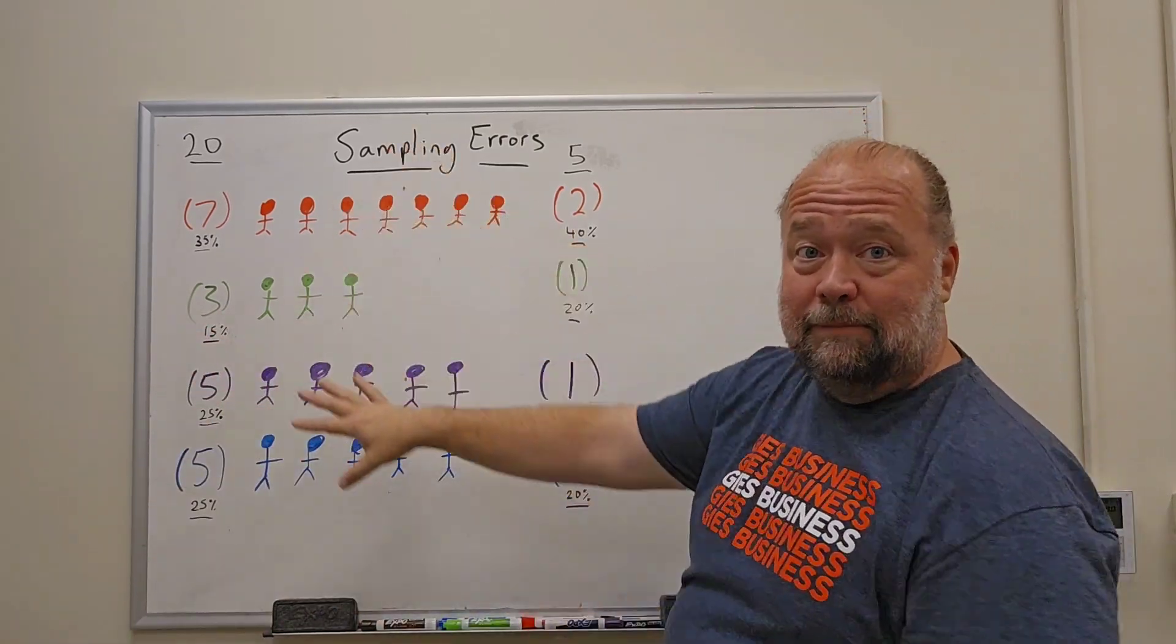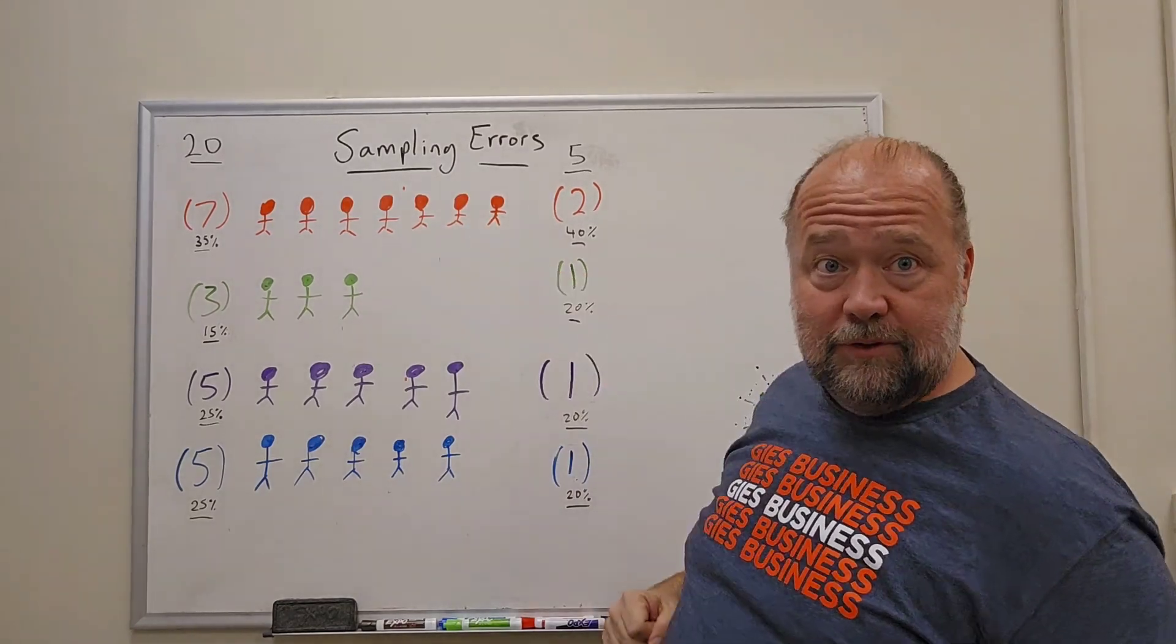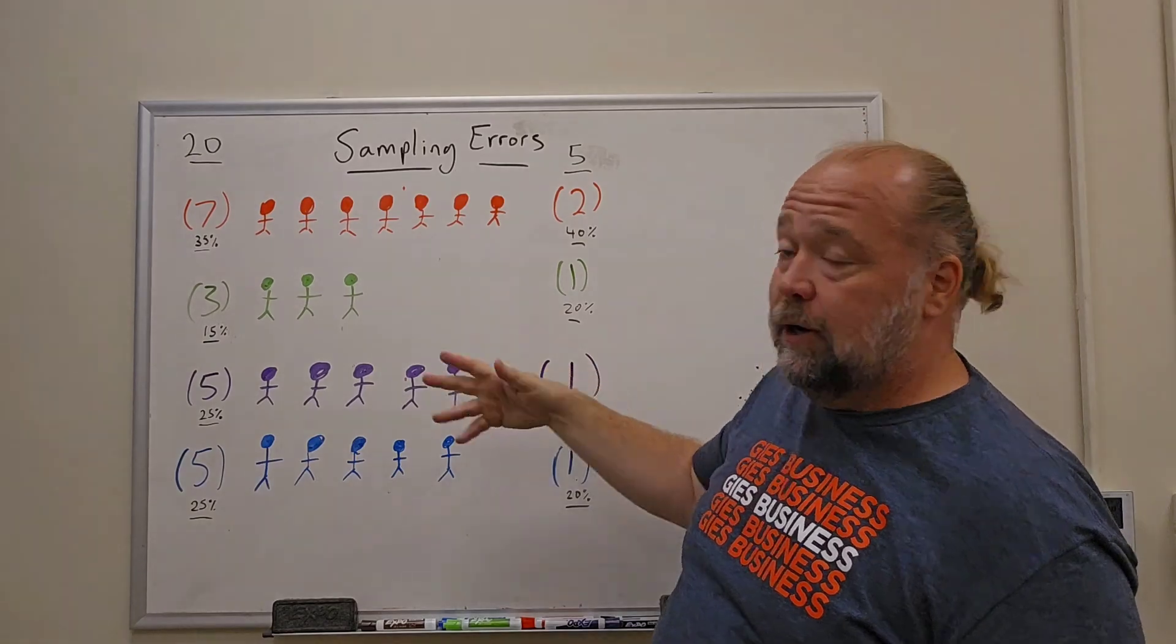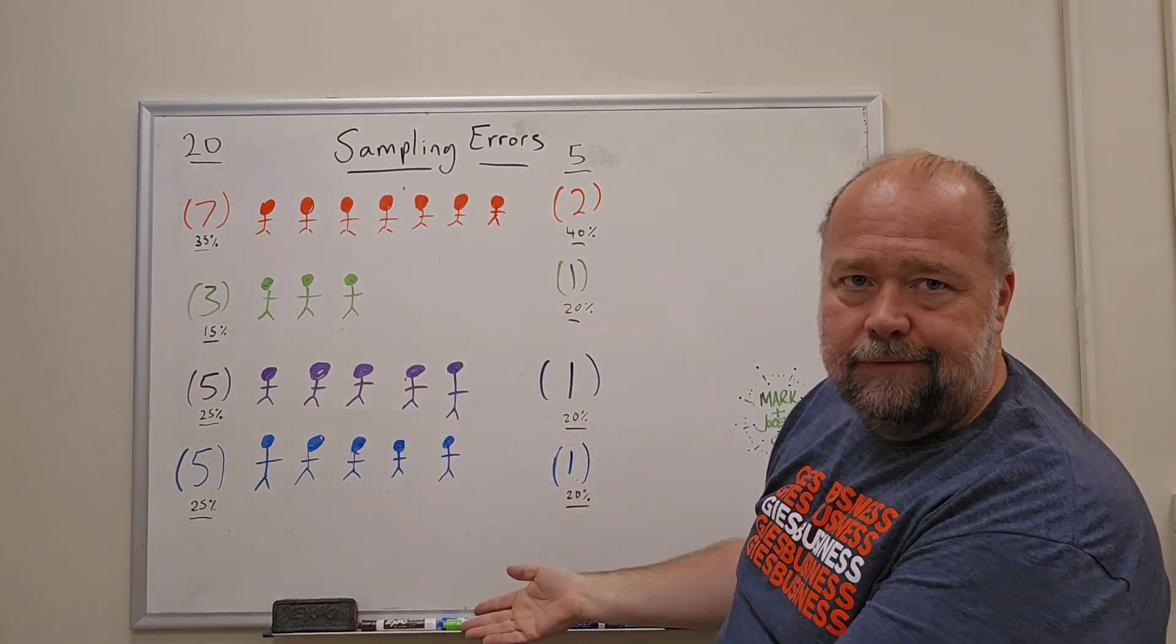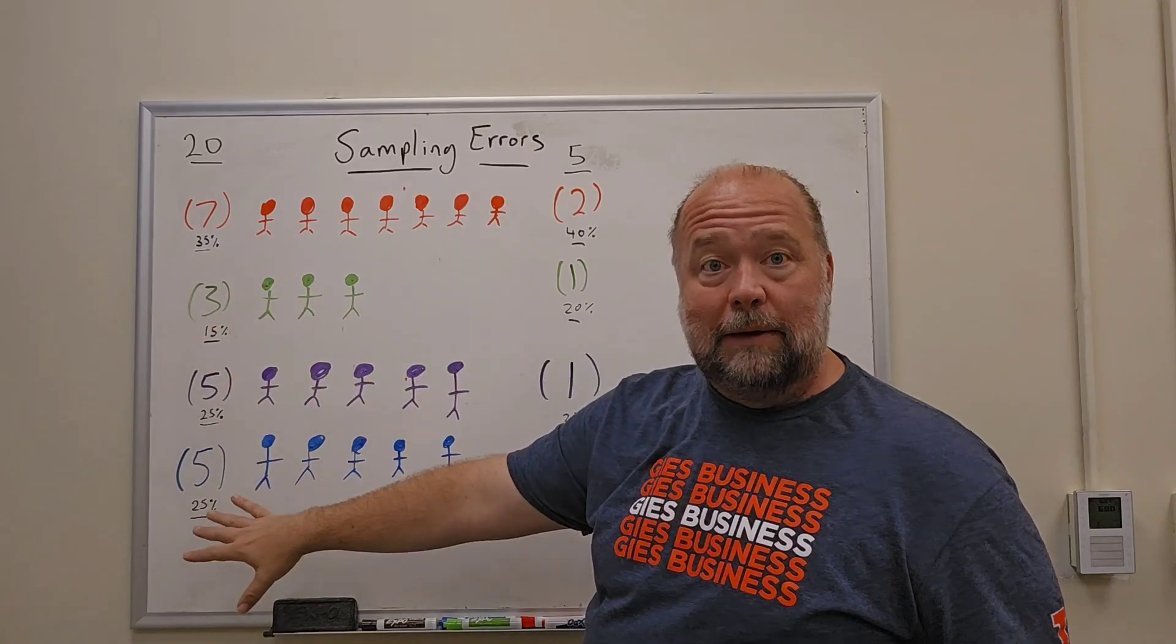So here I have an example. This is a population of 20 people. So there's seven reds, which is 35%. There's three greens, which is 15% of the population. There's five purples, 25% of the population, five blues, 25% of the population. So that is what they represent for the whole population.